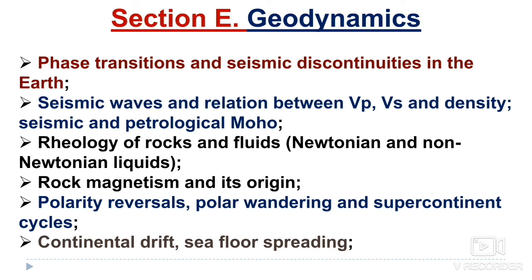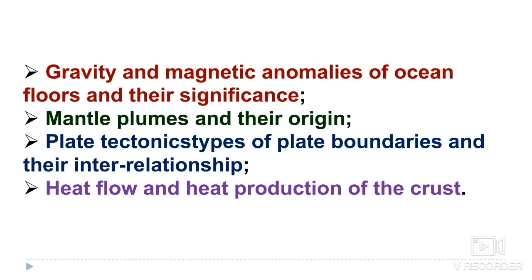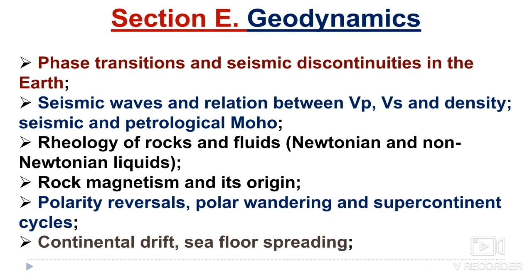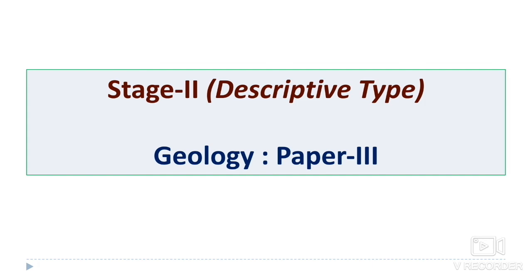Also included are the geology of rocks and fluids, Newtonian and non-Newtonian liquids, rock magnetism and its origin, polarity reversal, polar wandering curve, and supercontinent cycle — continental drift and sea floor spreading are very basic topics you would have studied many times. Gravity and magnetic anomalies of oceanic floors and their significance, mantle plumes and their origin, plate tectonics, types of plate boundaries and their interrelationship, and heat flow and heat production of the crust are important. This concludes the syllabus discussion for Paper 2; Paper 3 and hydrogeology will be discussed in the second part.